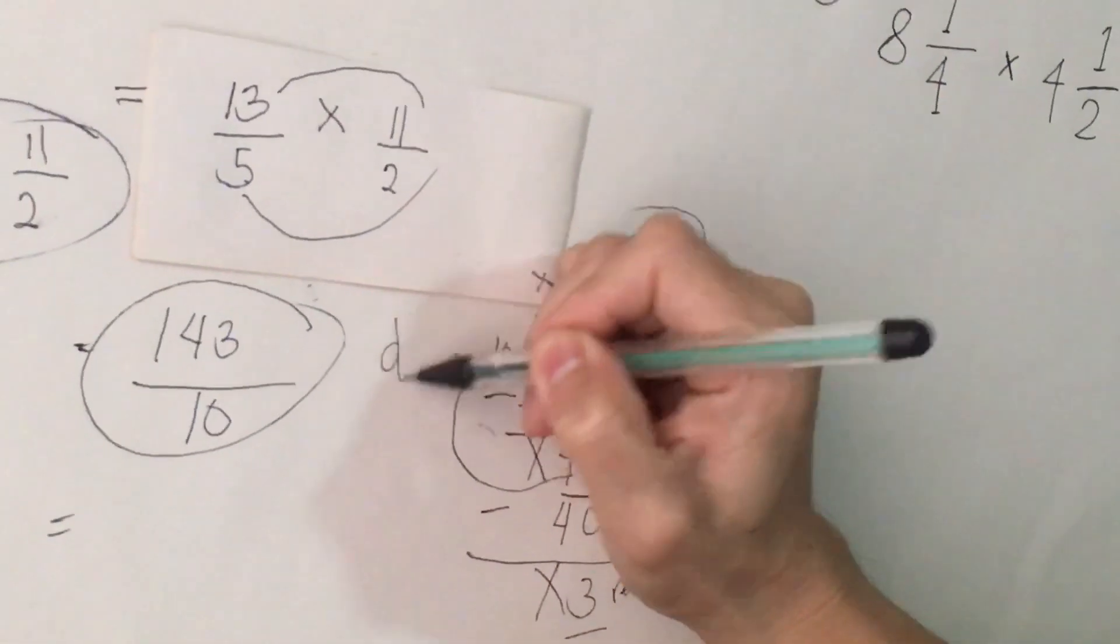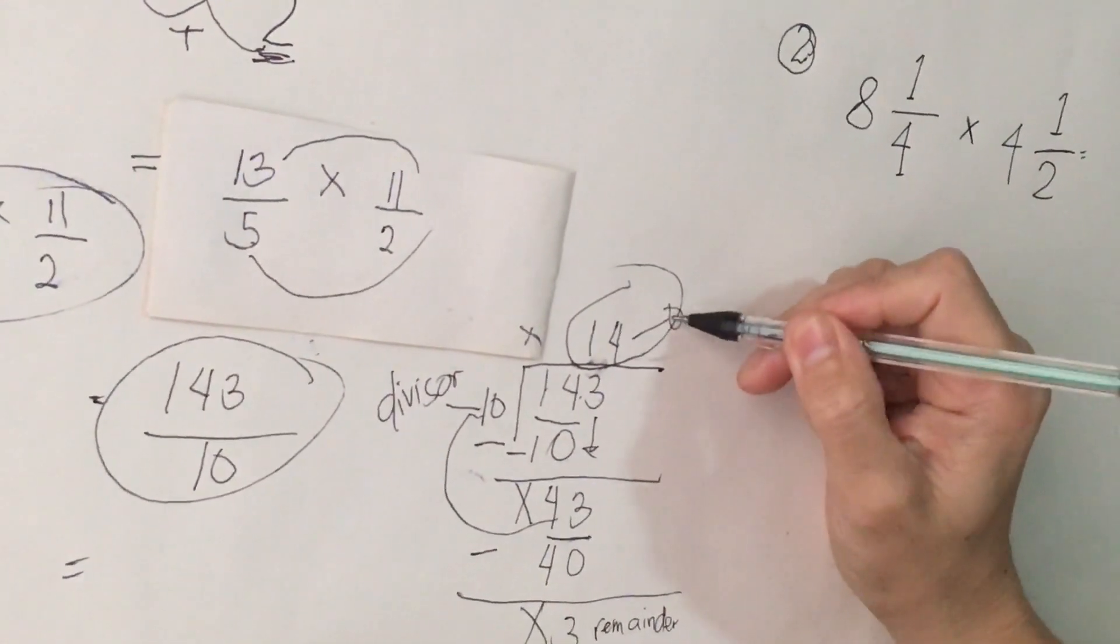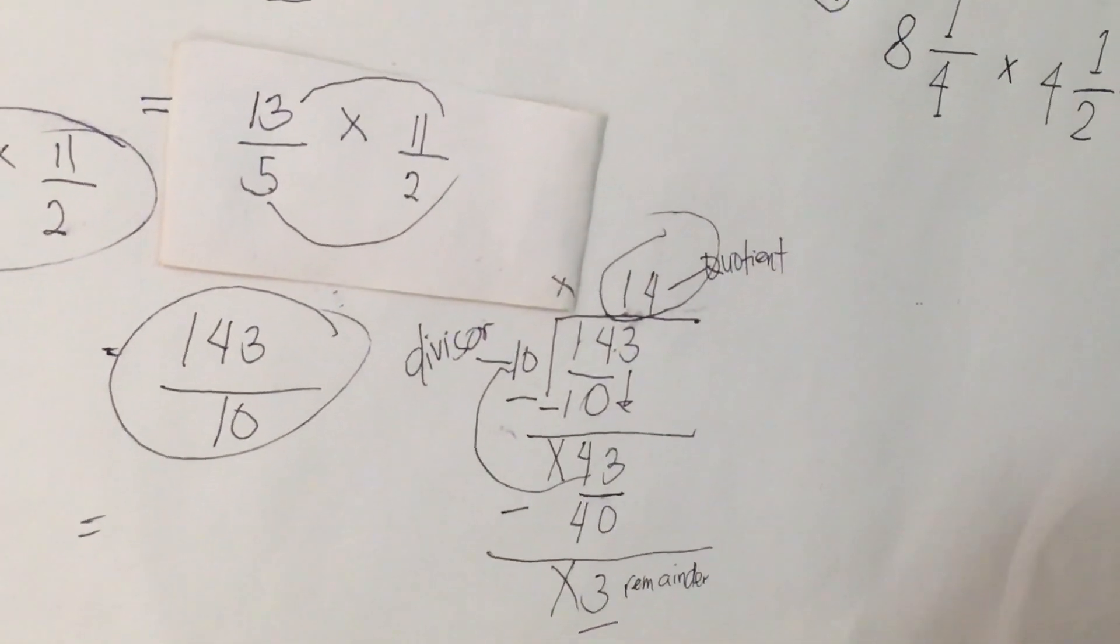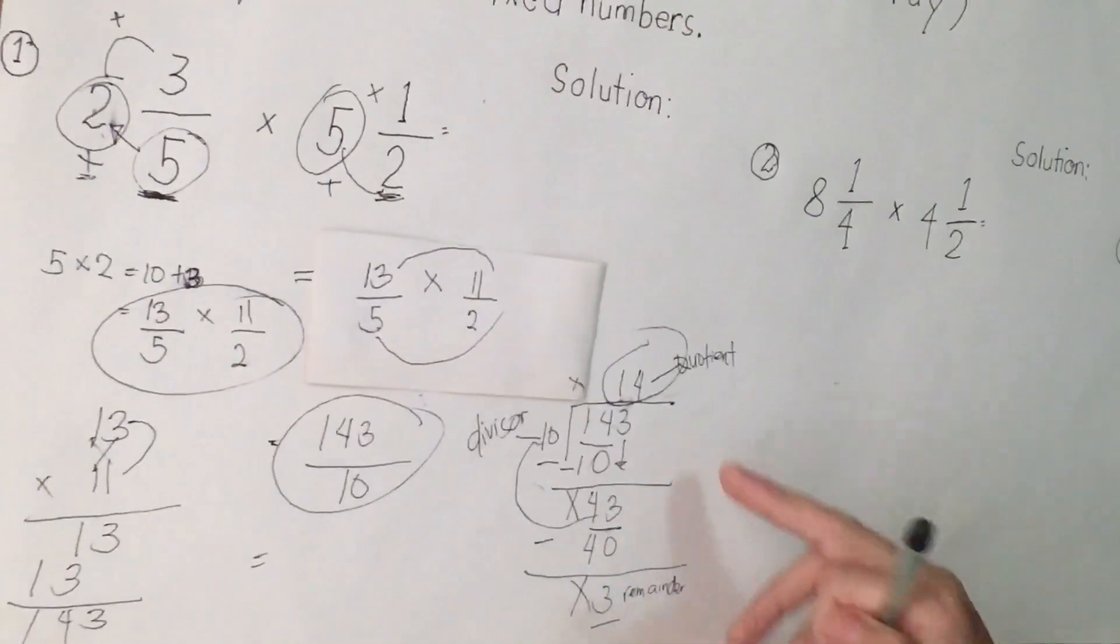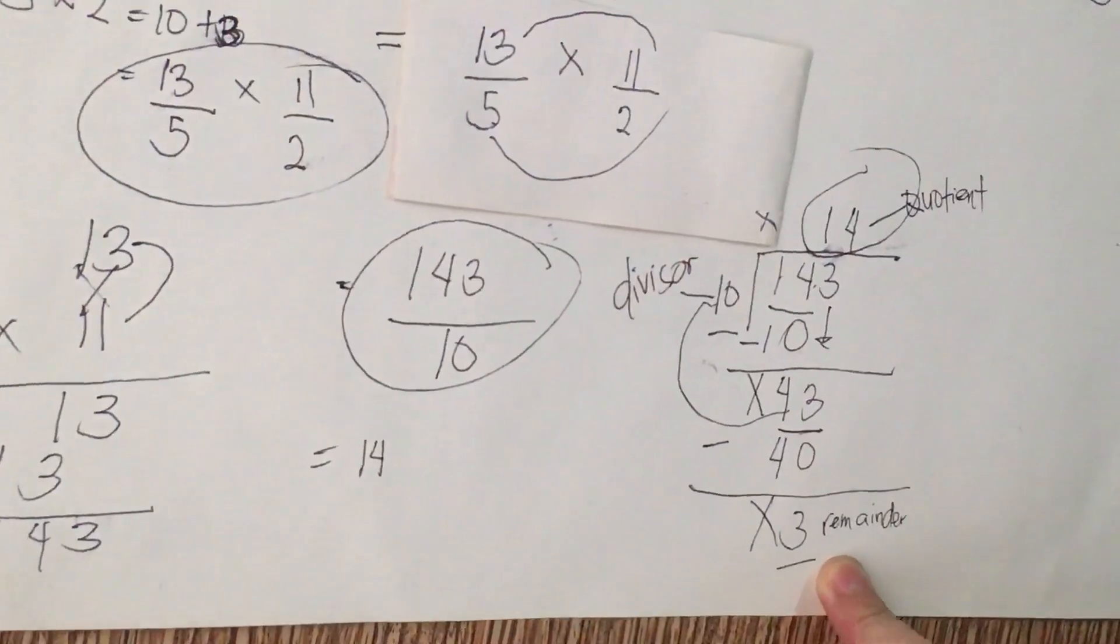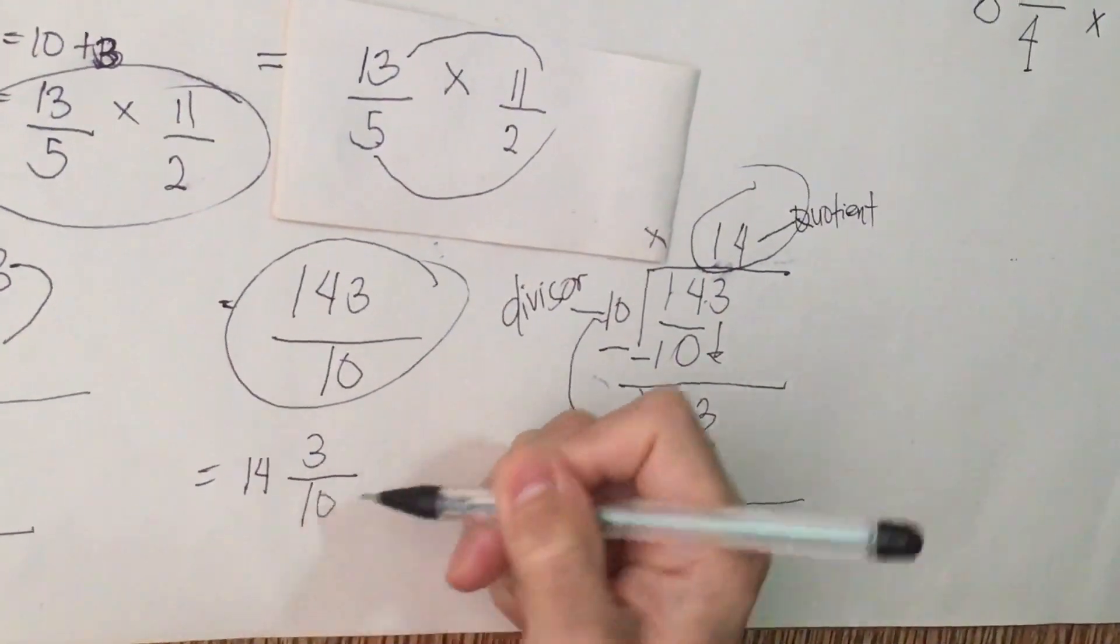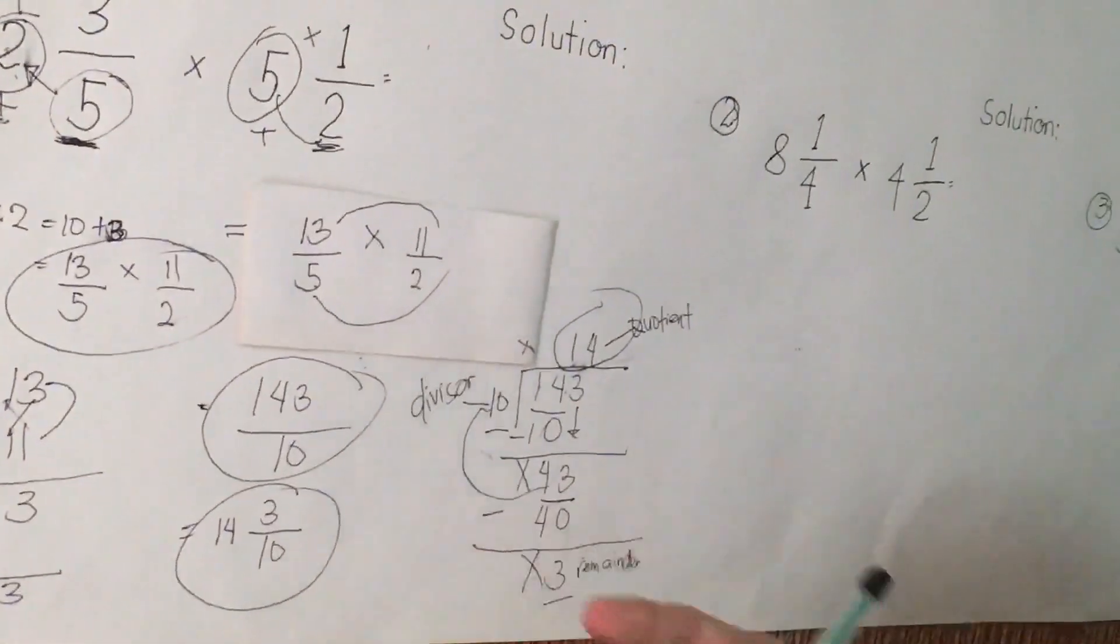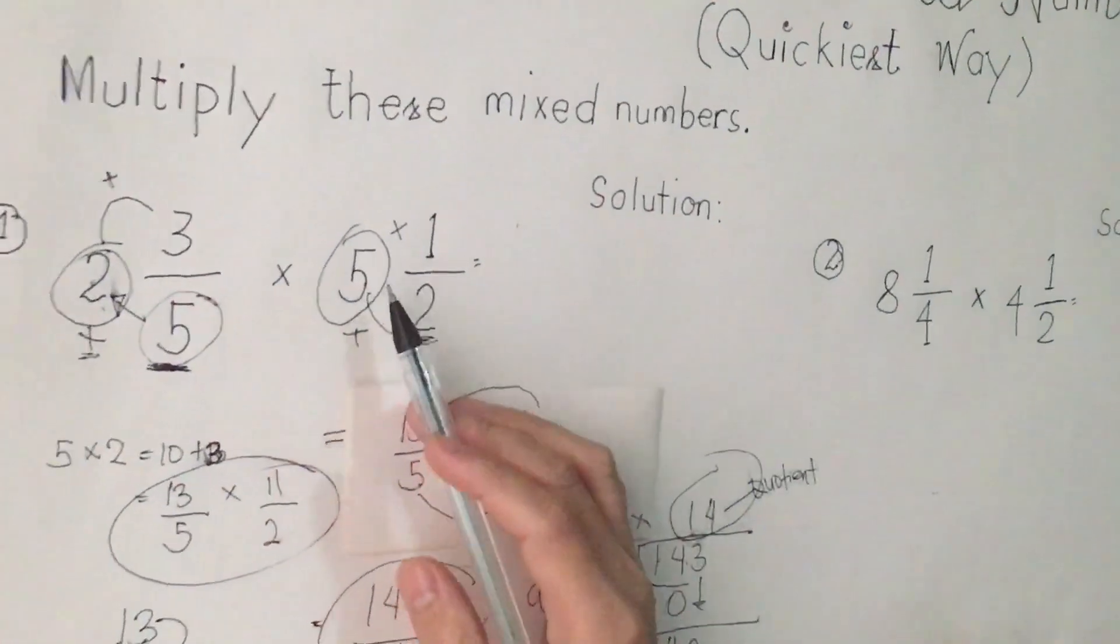So 10 is our divisor. That is part of division. So we have remainder, we have the quotient. So that you will know what are the parts of division. So how are we going to write our final answer? Simply, 14 is our quotient, becomes whole number. Remainder 3 becomes numerator, and our divisor is 10 becomes denominator. So our final answer is 14 and 3 over 10. This will be our final answer for number 1 problem, which is 2 and 3 fifths times 5 and 1 half.